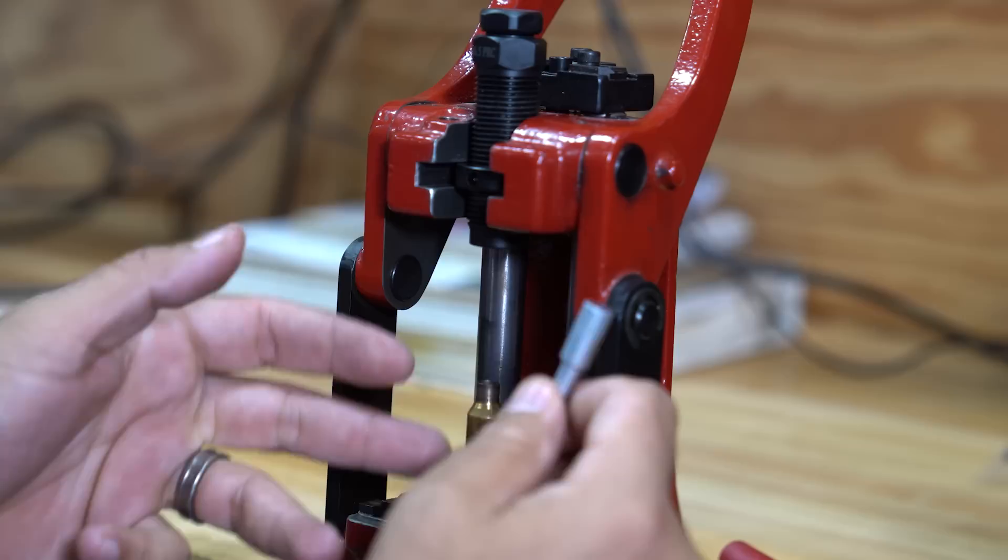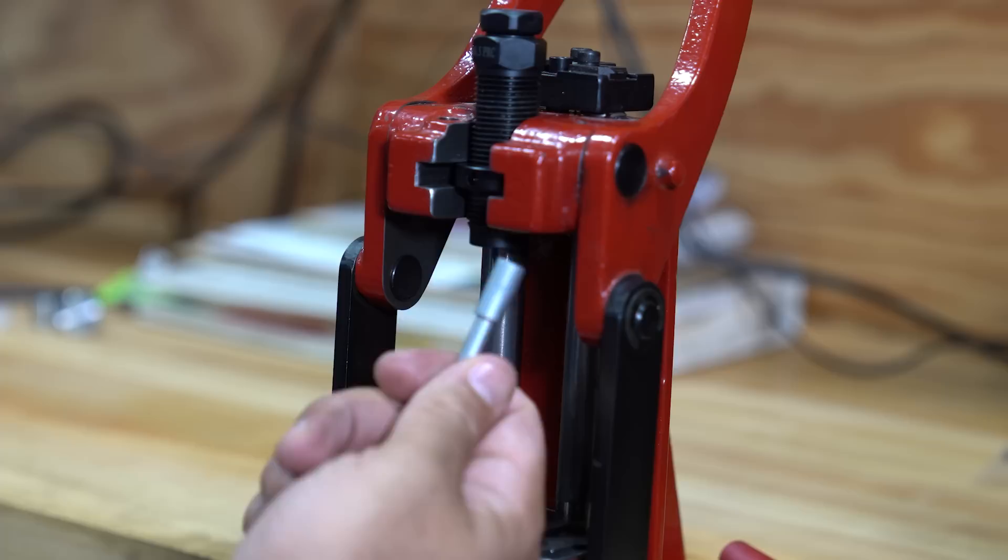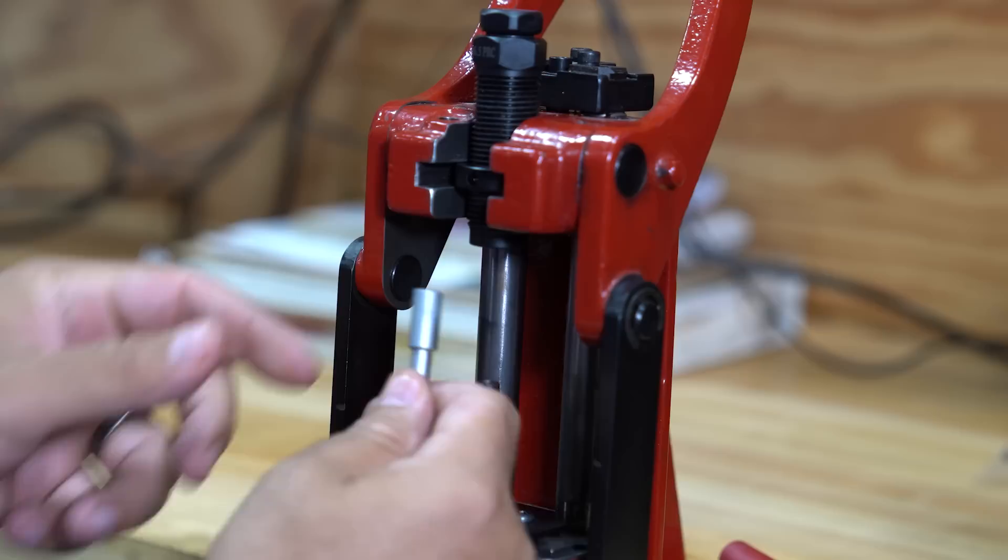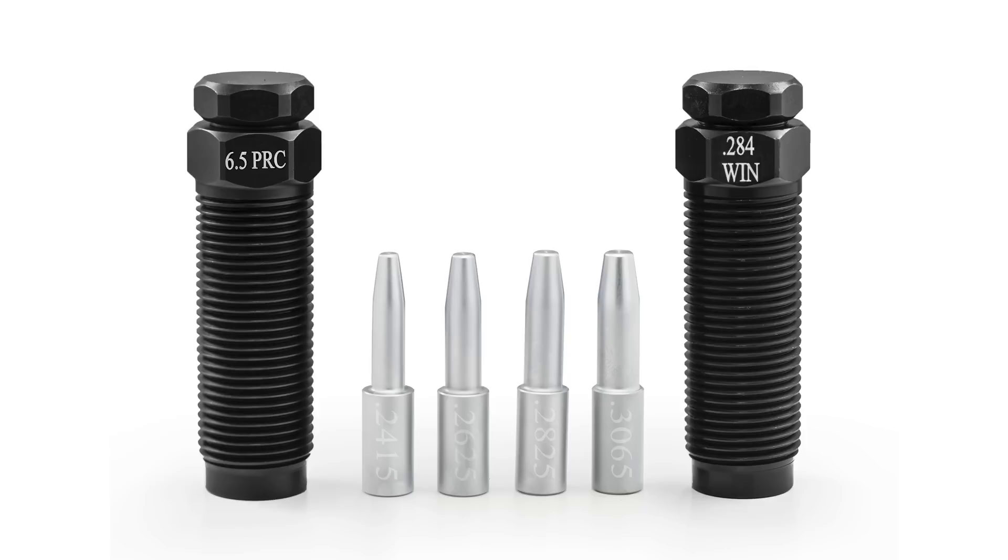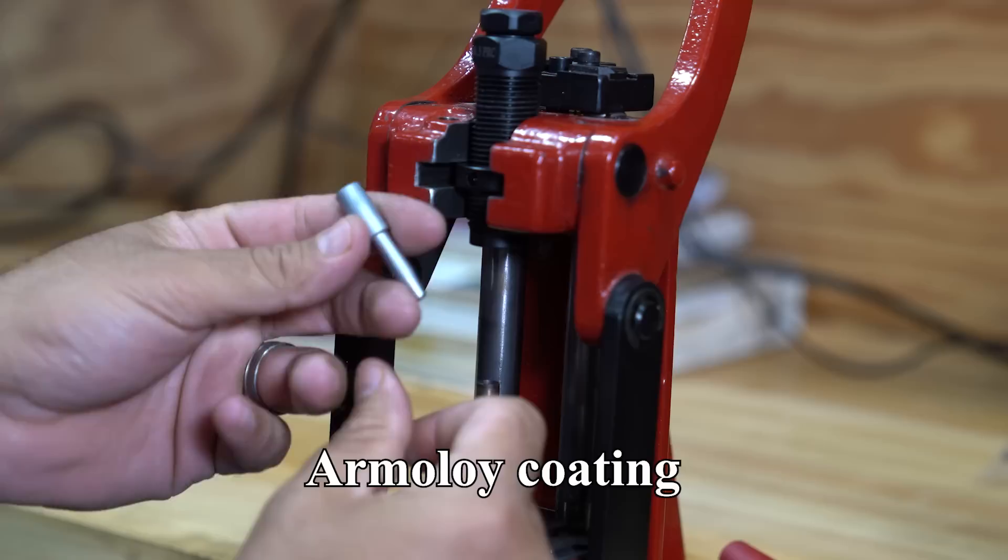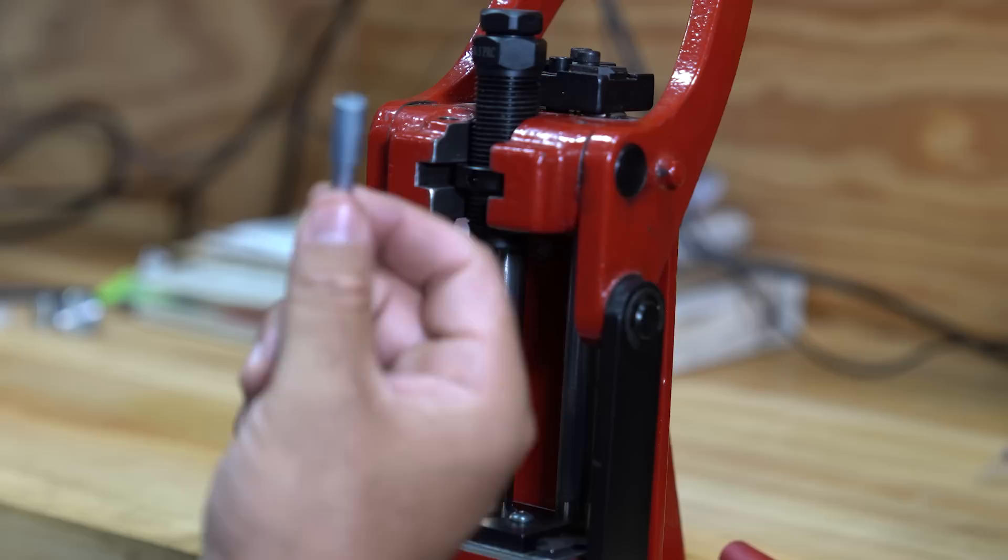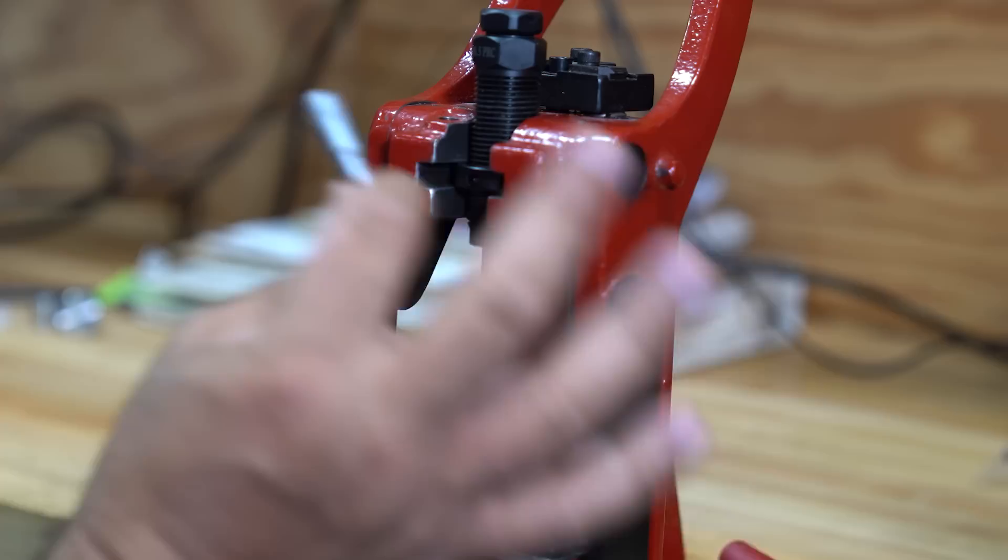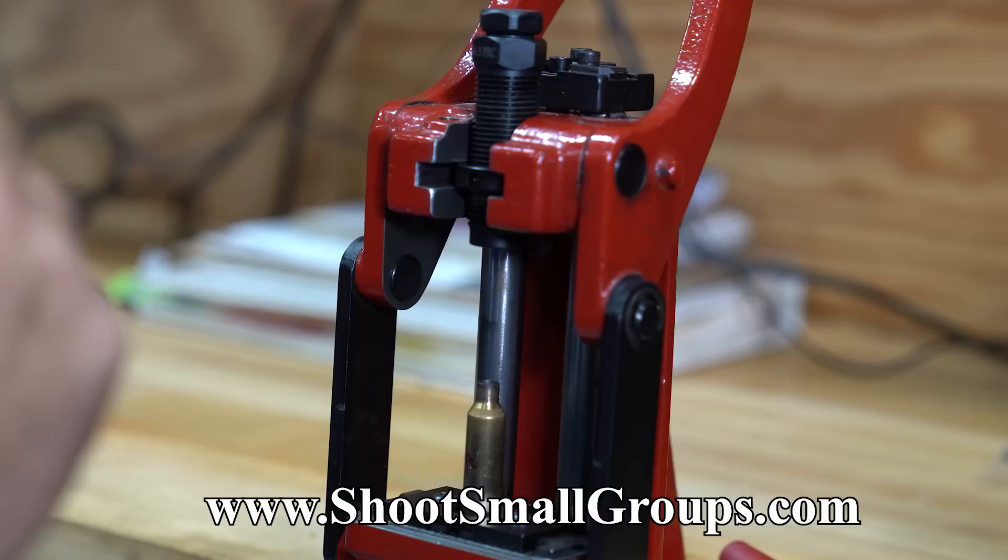It's a wasted pull of the handle to not be handling that base at the same time. These mandrels are also available on the website. The mandrels that we have are 2,000ths below bullet diameter, and I think we go up and down 1,000ths from there, half-thousandths increments. These are coated with armolloy. It's a really good coating. It offers lubricity and hardness. So, very good coating. If you already have your 21st century mandrels and you're happy with them, then no need to buy extra mandrels. However, if you want to try these, they're also on the website, shootsmallgroups.com.